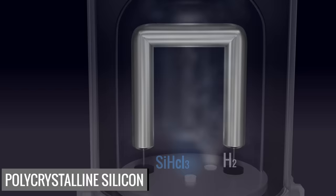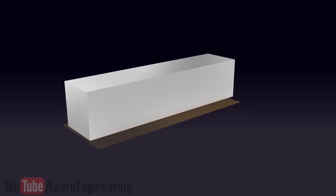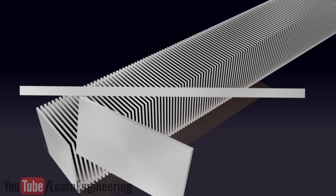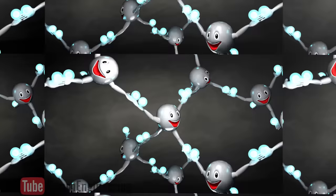These silicon ingots are reshaped and converted into very thin slices called silicon wafers. The silicon wafer is the heart of a photovoltaic cell. When we analyze the structure of the silicon atoms, you can see they are bonded together.